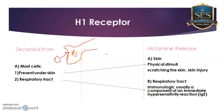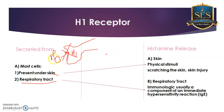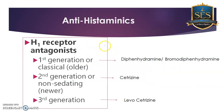Binding of histamine to the H1 receptor induces allergic responses — it causes vasodilation, it induces inflammation, and it also induces other allergic responses. To block all these allergic responses, we have to block the binding of histamine to the histamine receptor. Hence, today's lecture focuses on H1 receptor antagonists, which act on H1 receptors in both skin and respiratory tract.